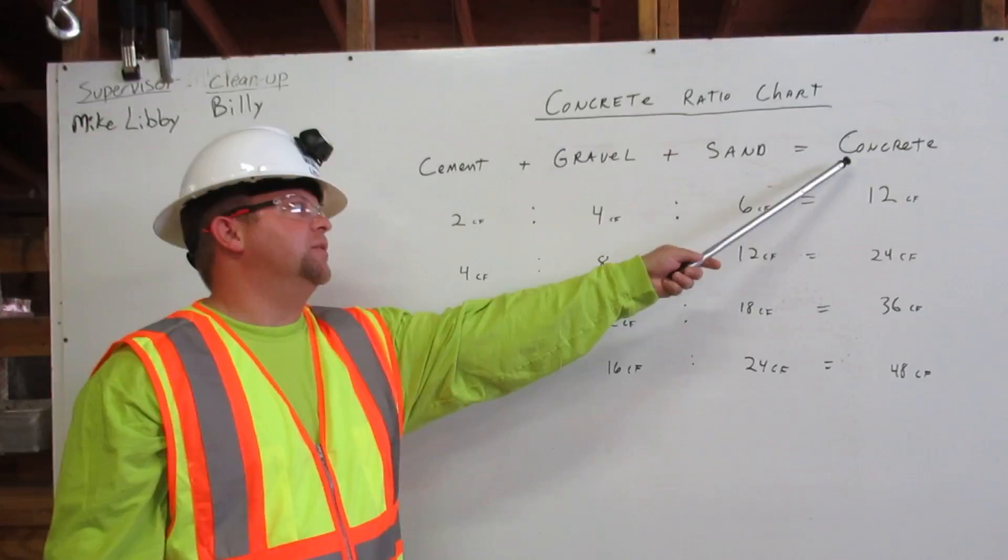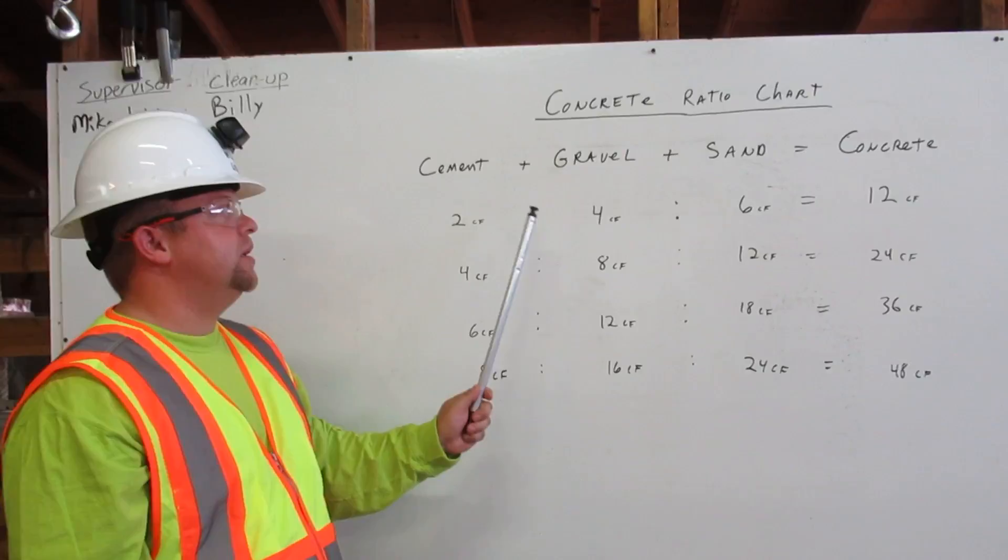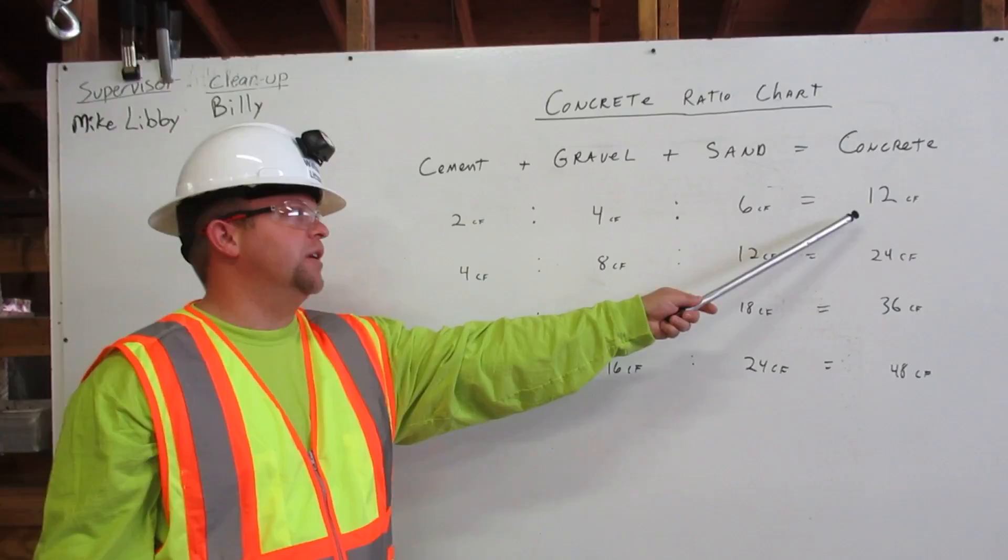If we need 12 cubic feet of concrete, we will mix 2 cubic feet of cement, 4 cubic feet of gravel, and 6 cubic feet of sand. That will give us 12 cubic feet of concrete.